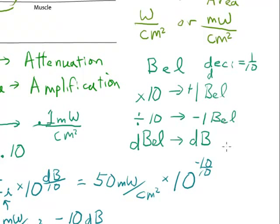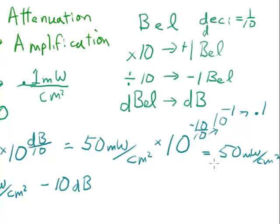And 10 to the negative 1 power is equal to 1 tenth, just 0.1. So this is equal to 50 milliwatts per square centimeter times 0.1.